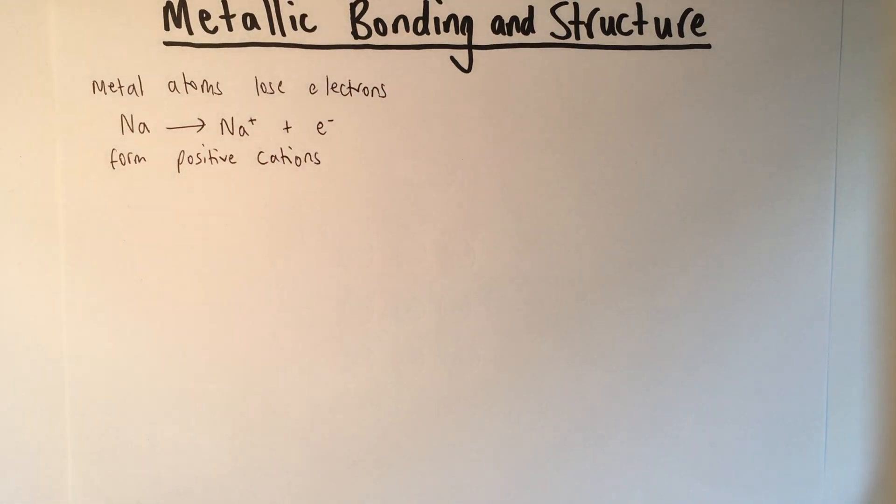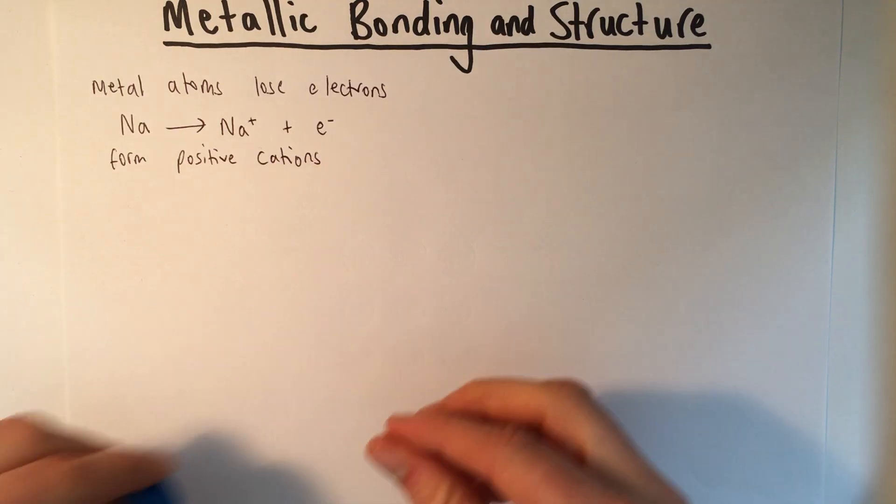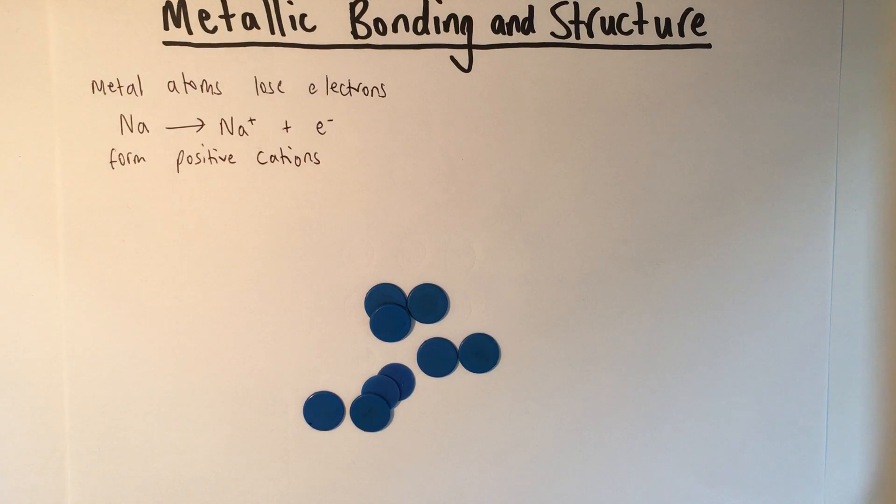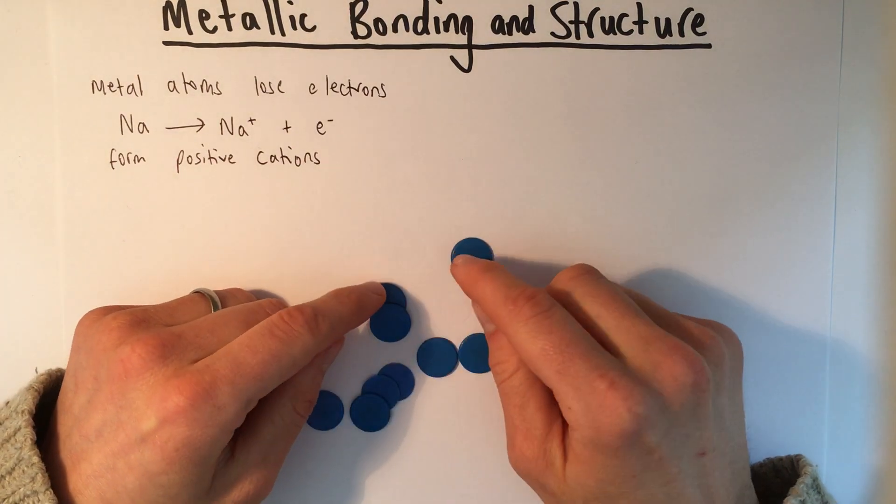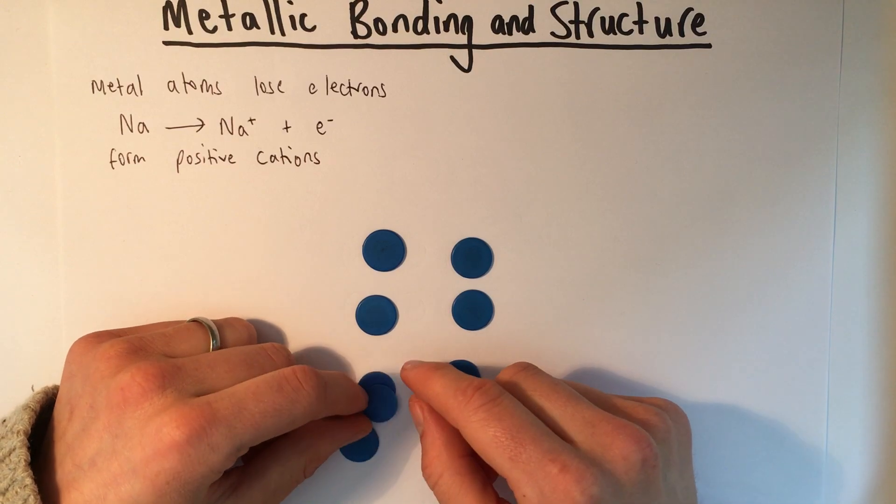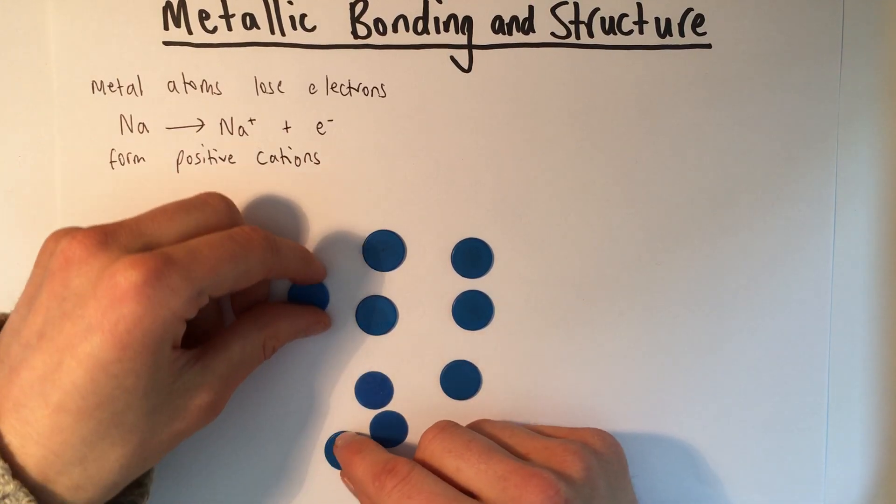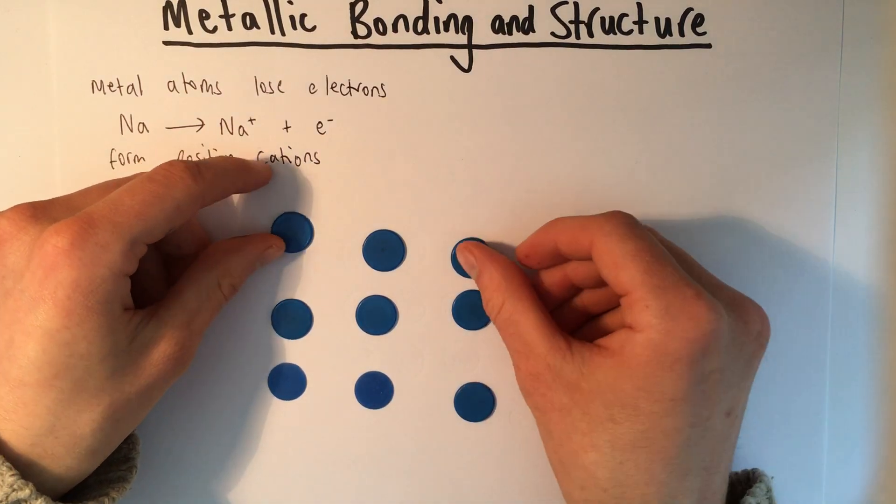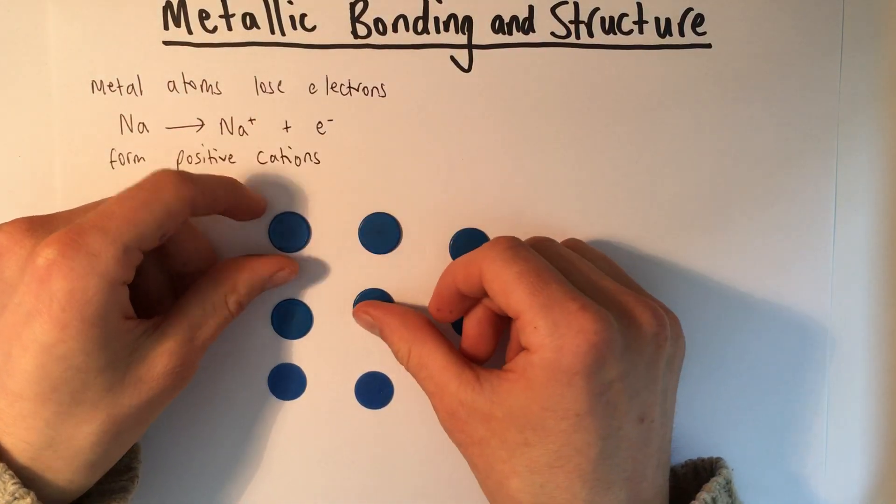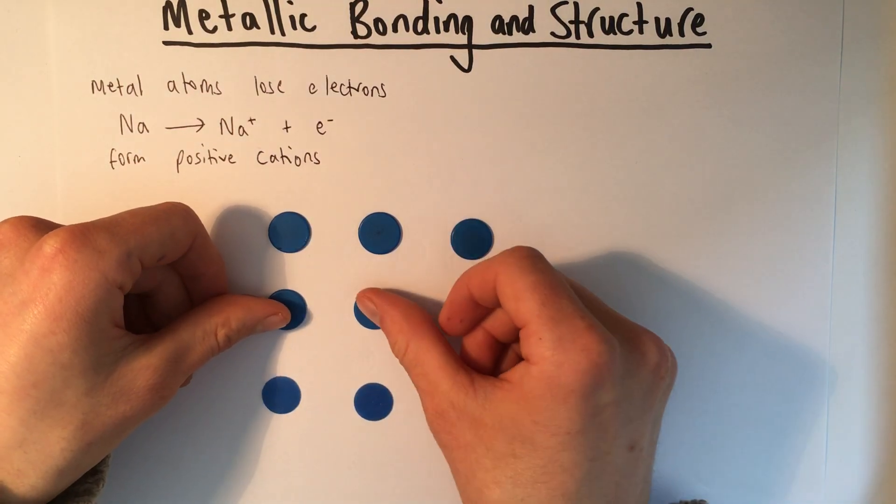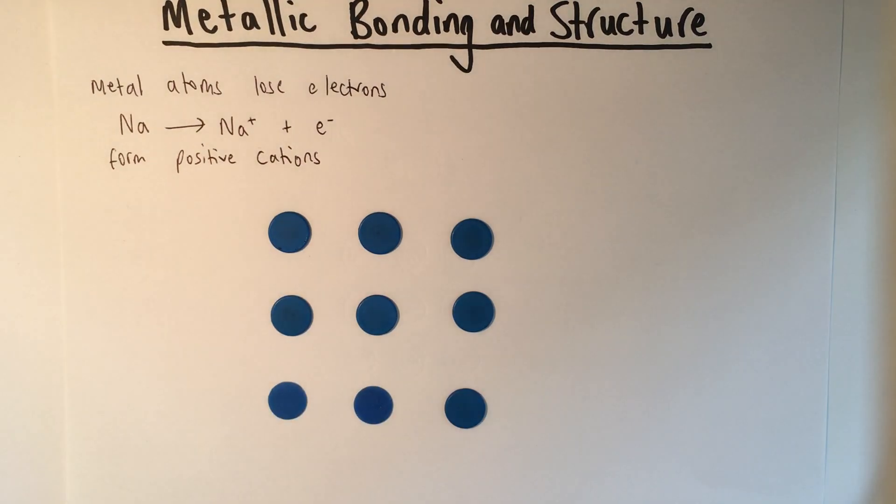That determines how they arrange themselves. Let's say that these counters are positive metal cations. Think like magnets. Because they're all positive, they want to repel each other. So they're going to all push each other as far apart as possible. They're going to repel to make a really consistent even pattern, because they're all repelling each other as much as they possibly can.